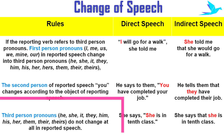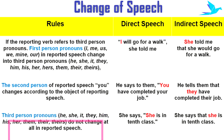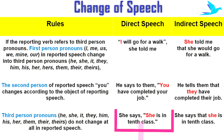The third rule: third person pronouns — he, she, it, they, him, his, her, them, their, theirs — do not change at all in the reported speech. For example: she says, 'She is in 10th class.' In indirect speech: she says that she is in 10th class. Here, 'she' remains the same.